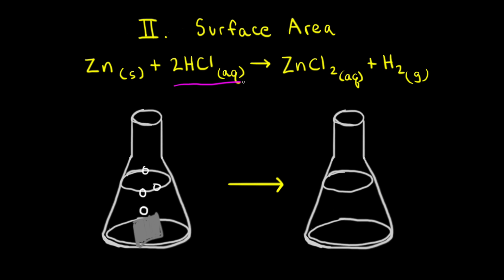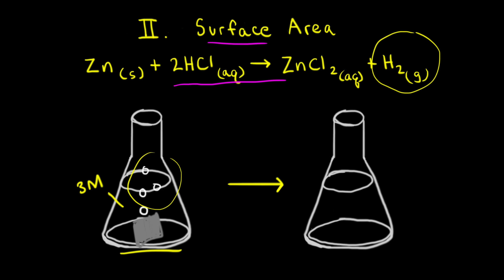Let's use this same reaction to talk about another factor that affects the rate of reaction, and that factor is surface area. We've already reacted a piece of solid zinc with 3 molar hydrochloric acid and saw some bubbles come off, indicating that hydrogen gas was produced. This time, let's try breaking the piece of zinc into smaller pieces. So instead of using one large piece of zinc, here we have a bunch of small pieces of zinc. If we were to do the experiment again with 3 molar hydrochloric acid, this time we would see more bubbles of hydrogen gas coming off of those small pieces of zinc.